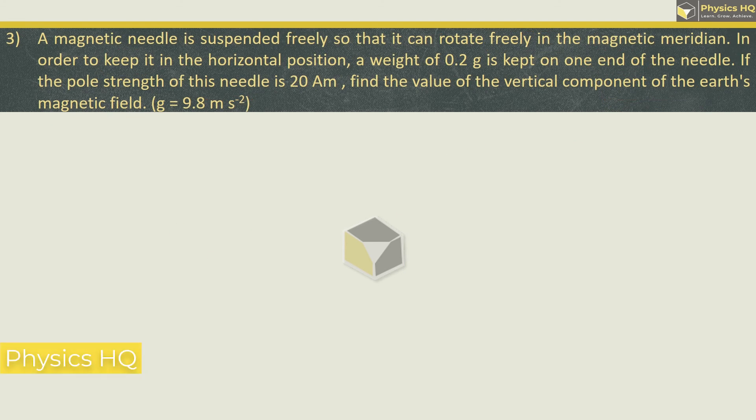A magnetic needle is suspended freely so that it can rotate freely in the magnetic meridian. In order to keep it in the horizontal position, a weight of 0.2 gram is kept on one end of the needle. If the pole strength of the needle is 20 ampere meter, find the value of vertical component of earth's magnetic field. G value is 9.8 meter per second square.